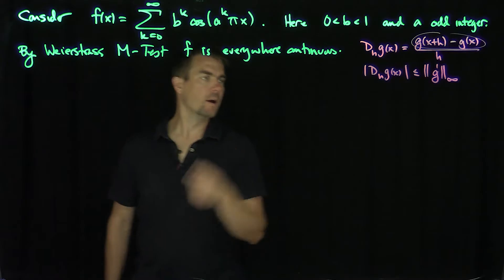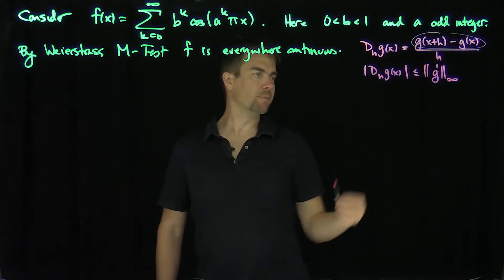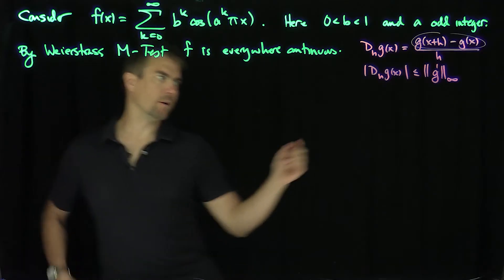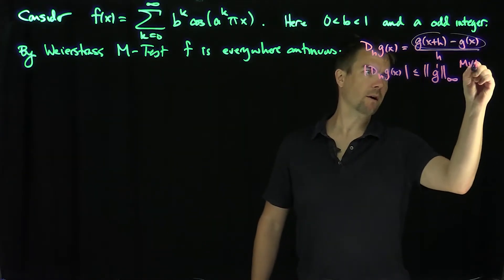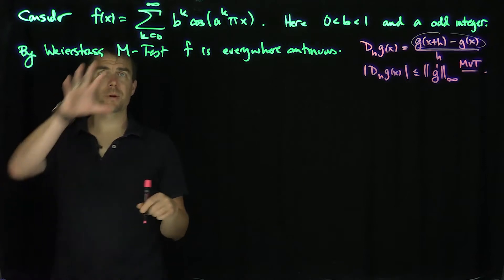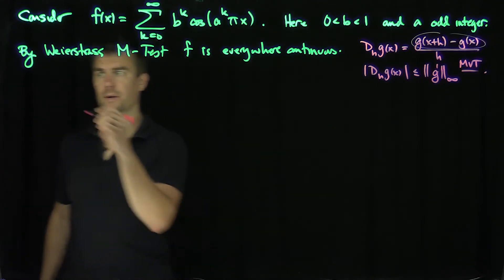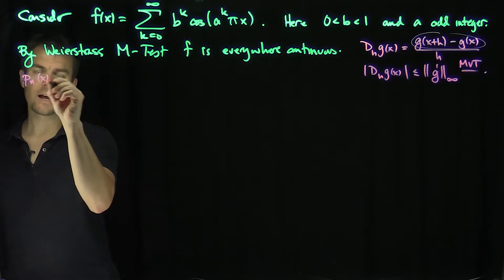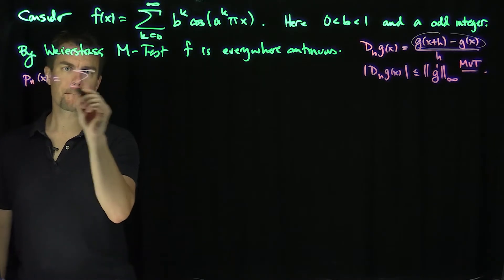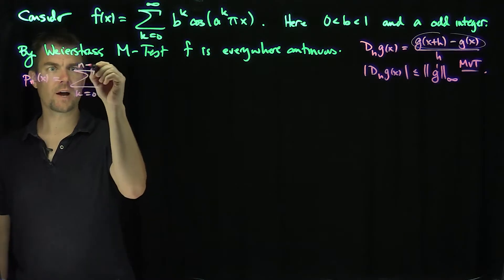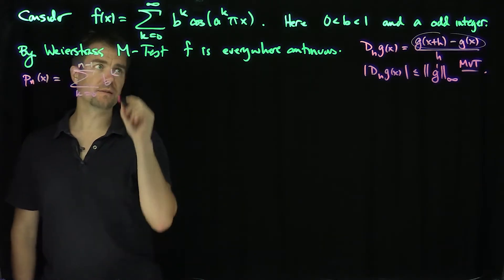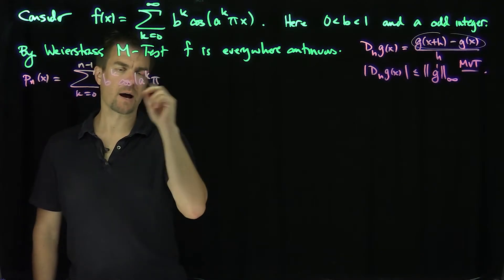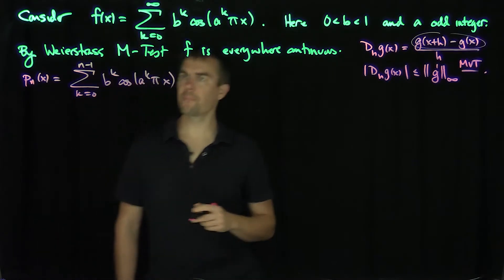If g prime is unbounded this is trivial, but if g prime is bounded I get this estimate automatically by the mean value theorem. Now I'm going to break this up into partial sums. Let p_n of x be the sum k from 0 to n minus 1 of b to the k cosine of a to the k pi x — just the partial sum.